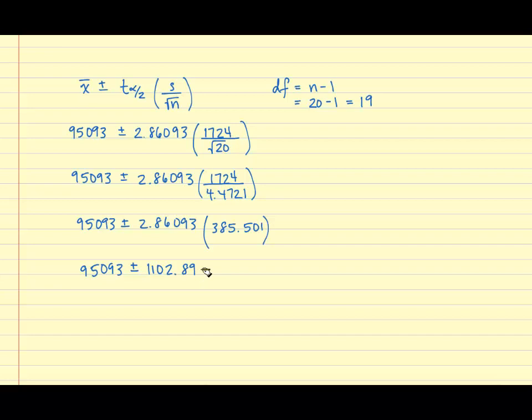In order to get the lower bound of my confidence interval, I'm going to take 95,093 minus 1,102.89. And I get 93,990.11.